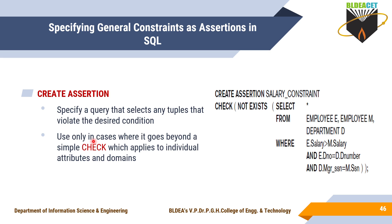Usually in the general case, we use a simple CHECK to specify individual attribute and domain constraints. For a specific domain and specific constraints, it is possible with CHECK only. But like this, if you want to specify semantic constraints, it is possible with CREATE ASSERTION.